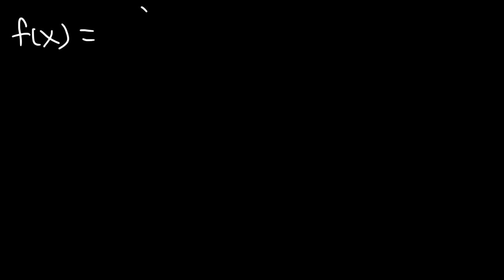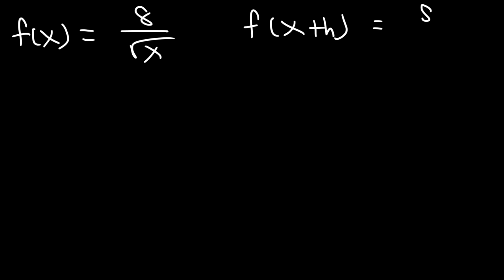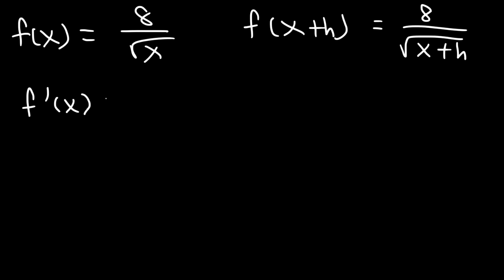Now what if the square root is in the bottom of a fraction? Like if we have 8 over the square root of x. What's the first derivative of this function? Well first let's find f of x plus h. Using the limit process to find the derivative, f of x plus h is going to be 8 over the square root of x plus h.